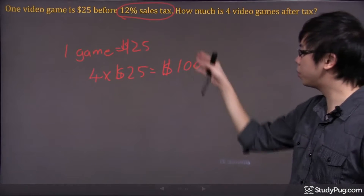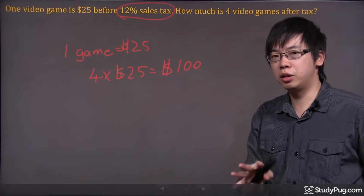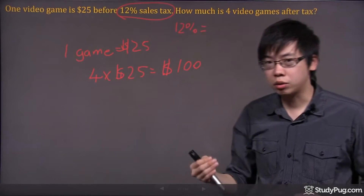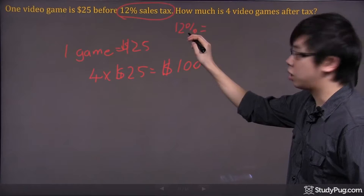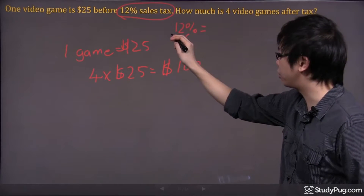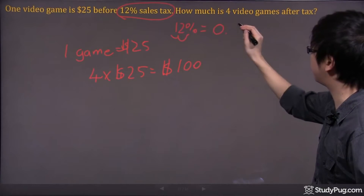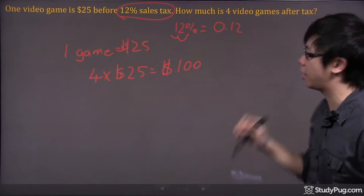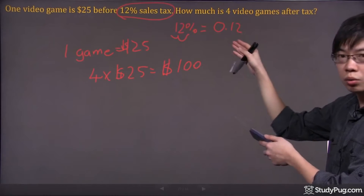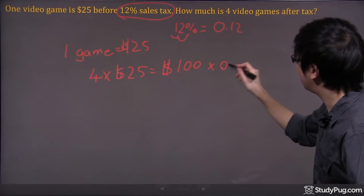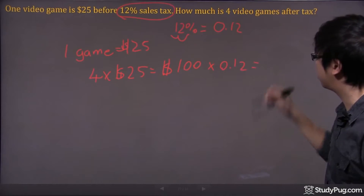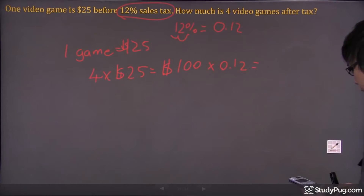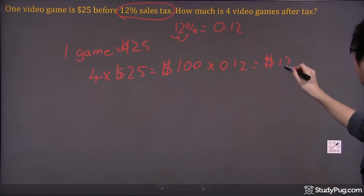Now, 12% of 100 is easy to calculate, but let's just show you the work. 12% — if you're going to get the decimal form, you need to take your decimal and move two places to the left. That gives you 0.12. So now you can take the 0.12 and multiply that by $100. It turns out to be just $12, because 100 is easy to work with.